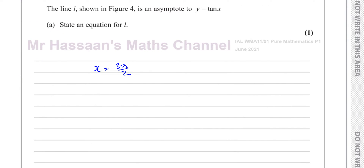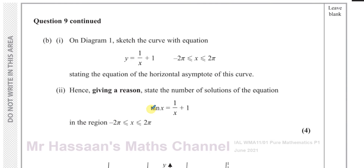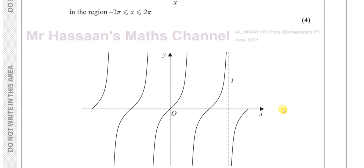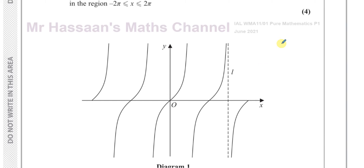I think I've got part B on the next page. It says: on diagram 1, sketch the curve with equation y equals 1 over x plus 1 for values of x between minus 2 pi and 2 pi, stating the equation of the horizontal asymptote. Then, giving a reason, state the number of solutions of tan x equals 1 over x plus 1 in the region between minus 2 pi and 2 pi.